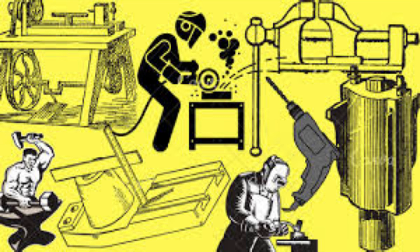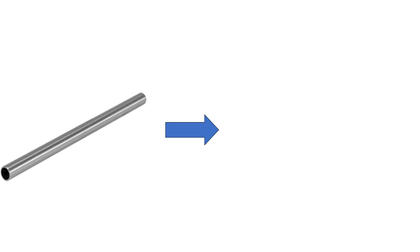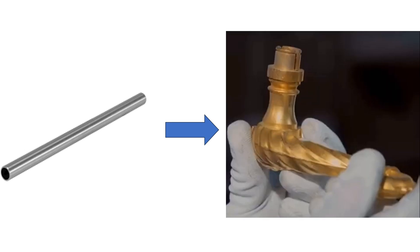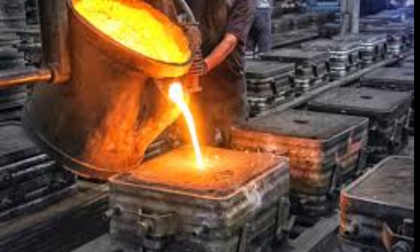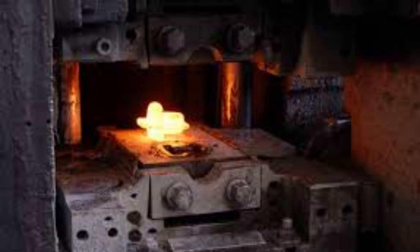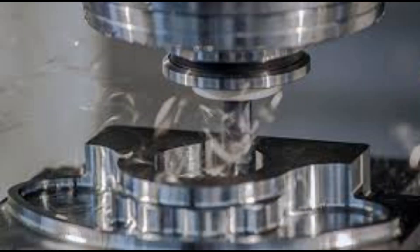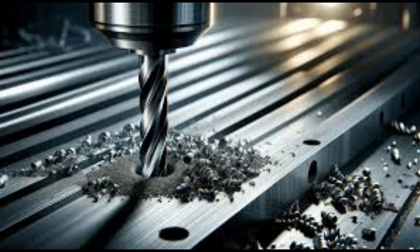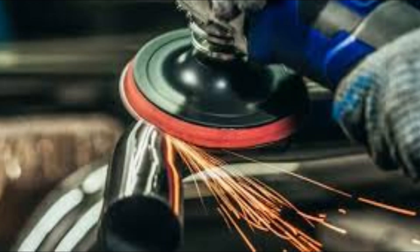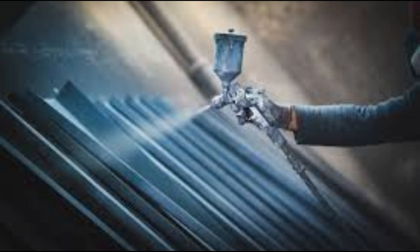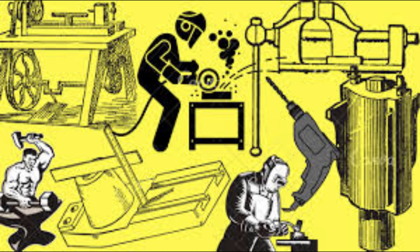Many manufacturing processes are used in industry to convert raw materials into useful products, like sand casting, forging, rolling, turning, milling, drilling, finishing, and coating. Each one has its characteristics and uses.